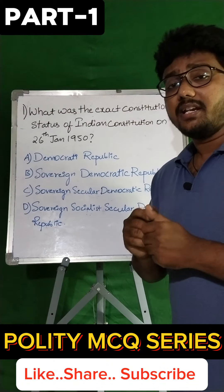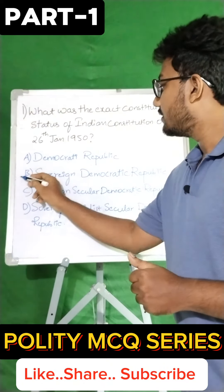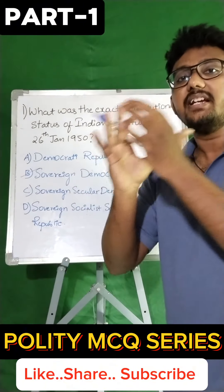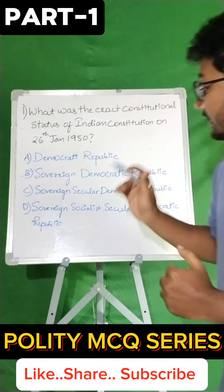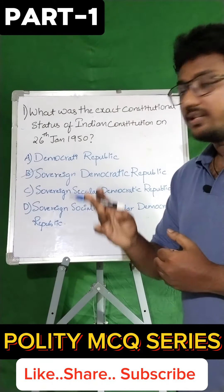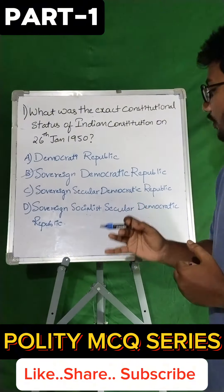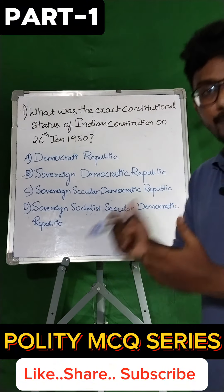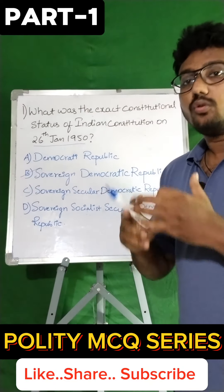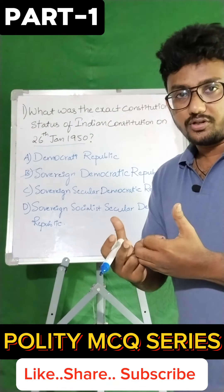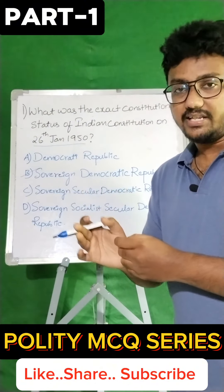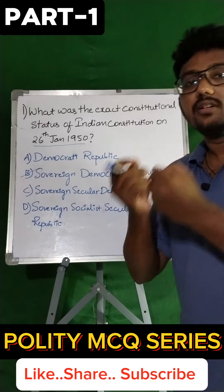The answer is Option B: Sovereign Democratic Republic. The original Indian preamble had only 3 words in that phrase. The present constitutional status is Sovereign Socialist Secular Democratic Republic, which is Option D. But the question is about 26th January 1950. The 2 words 'Socialist' and 'Secular' were added later by the 42nd Constitutional Amendment Act of 1976.